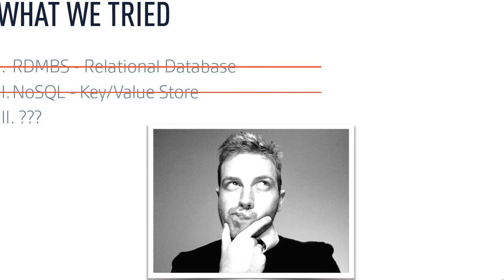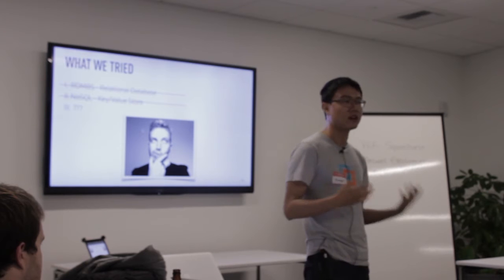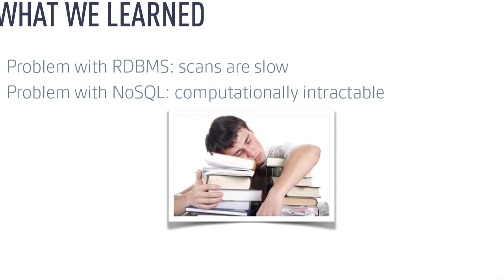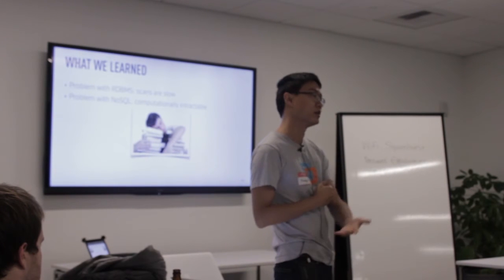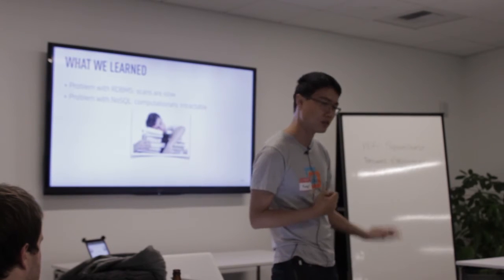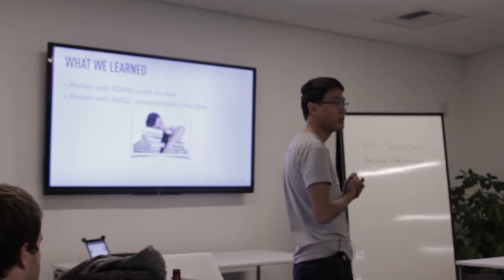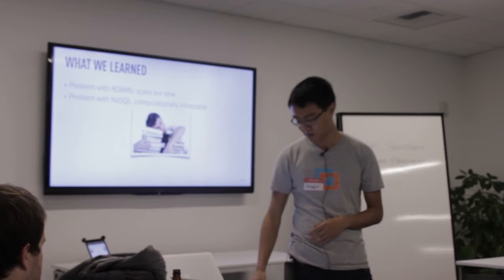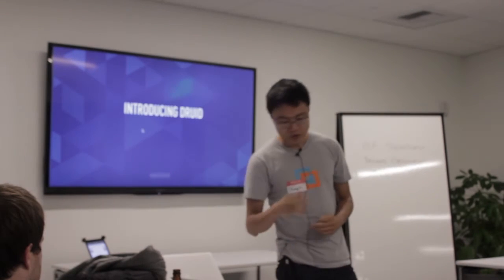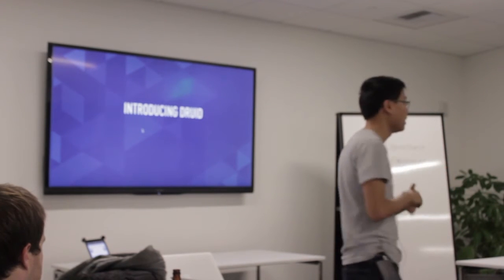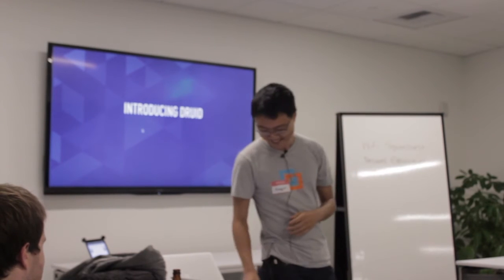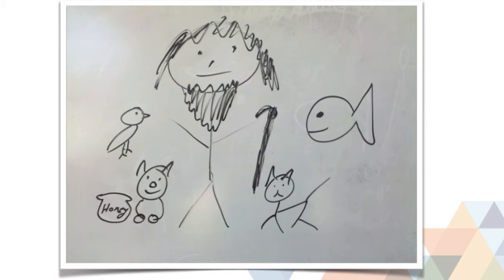Around mid-2011, we looked at other solutions in this space and found nothing that could solve our pain. So we started talking about building our own thing. We looked at lessons learned from relational databases — scans tended to be somewhat slow — and from NoSQL key-value stores — pre-computation time just took too long. We decided it might not be too hard to solve the relational database problem, so around mid-2011 we started really building out this system called Druid. Druid is named because the lead architect played a lot of World of Warcraft.